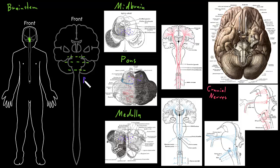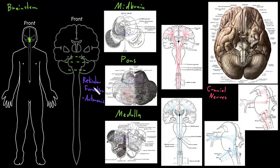The reticular formation consists of all these neuron somas scattered about through a lot of the gray matter inside the brainstem, and it turns out to be a really important structure. The reticular formation plays a big role in lots of autonomic functions, controlling things like circulation, respiration, and digestion — some of our critical organ system functions. In addition, the reticular formation sends lots of axons projecting up to the cerebrum and plays a major role in higher functions including cognition, emotion, and consciousness.